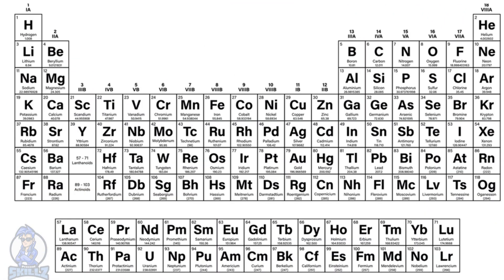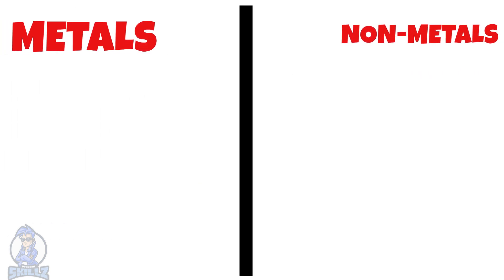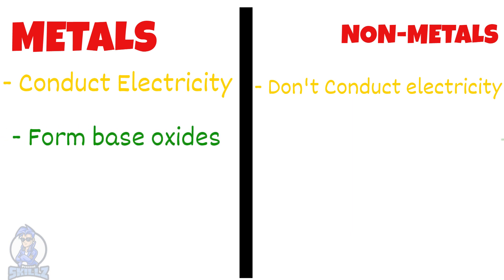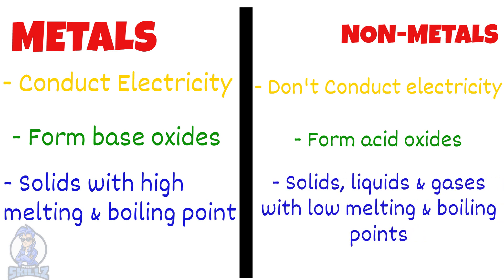The periodic table contains metal and non-metal elements, and there are many differences between them. Metals conduct electricity, but non-metals don't, with the exception of graphite. Metals react to form basic oxides such as copper oxide, but non-metals usually form acidic oxides such as carbon dioxide. Most metals are solids with high melting and boiling points, but non-metals can be solids, liquids or gases with low melting or boiling points.